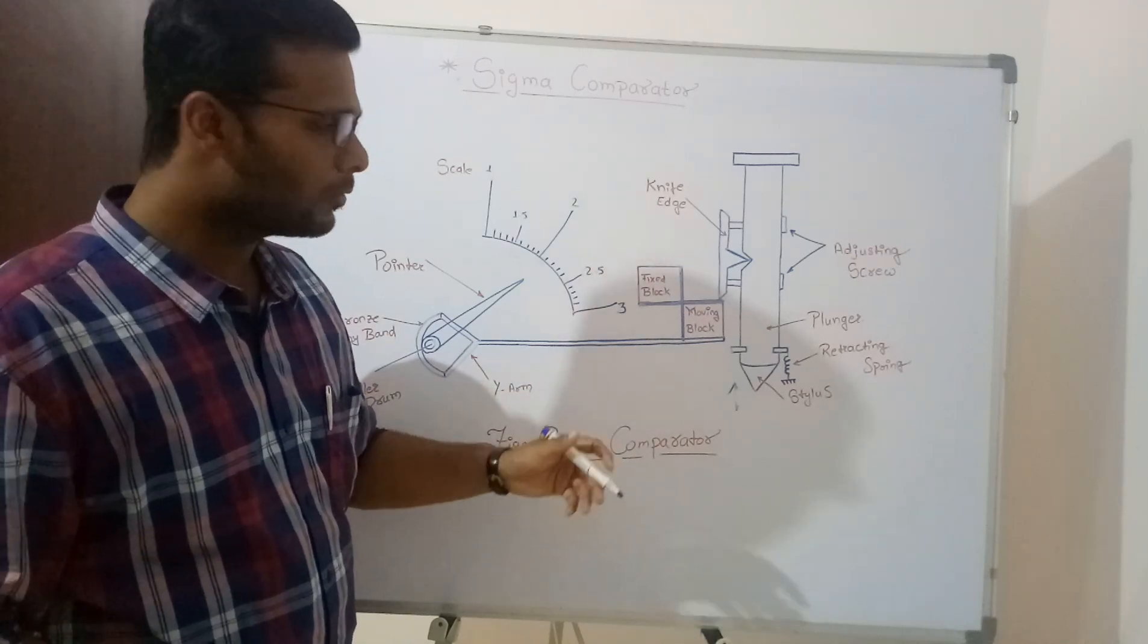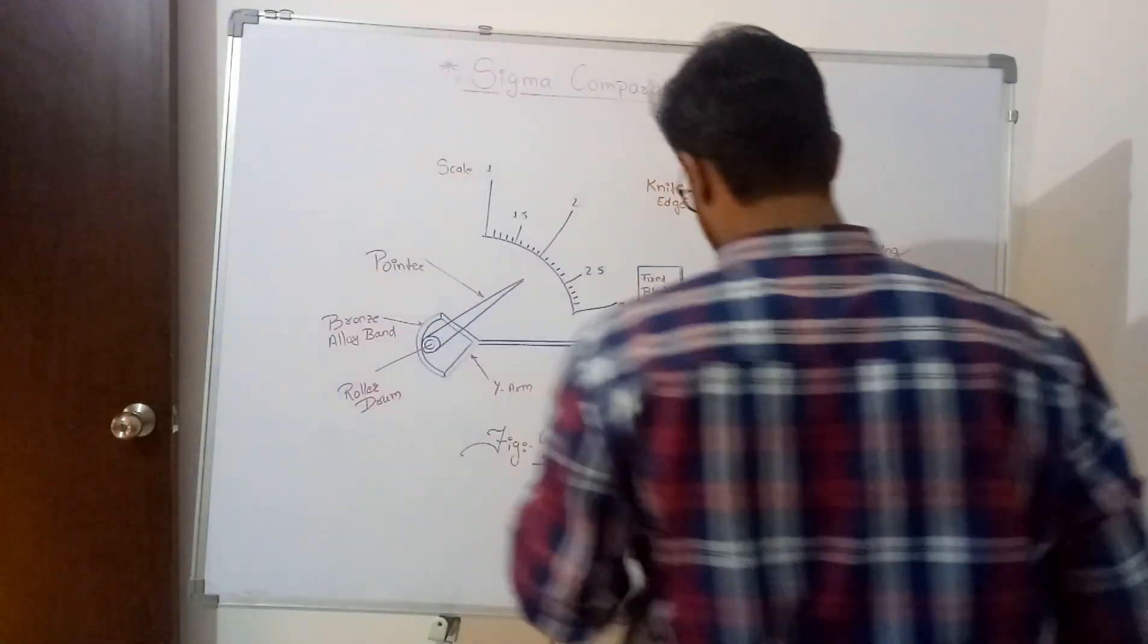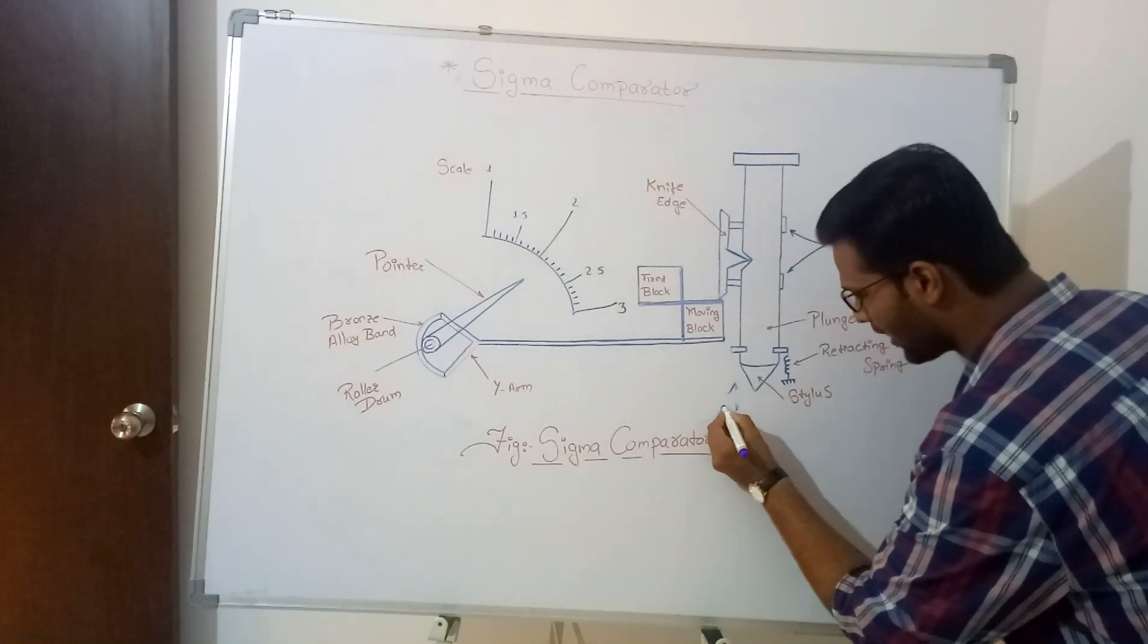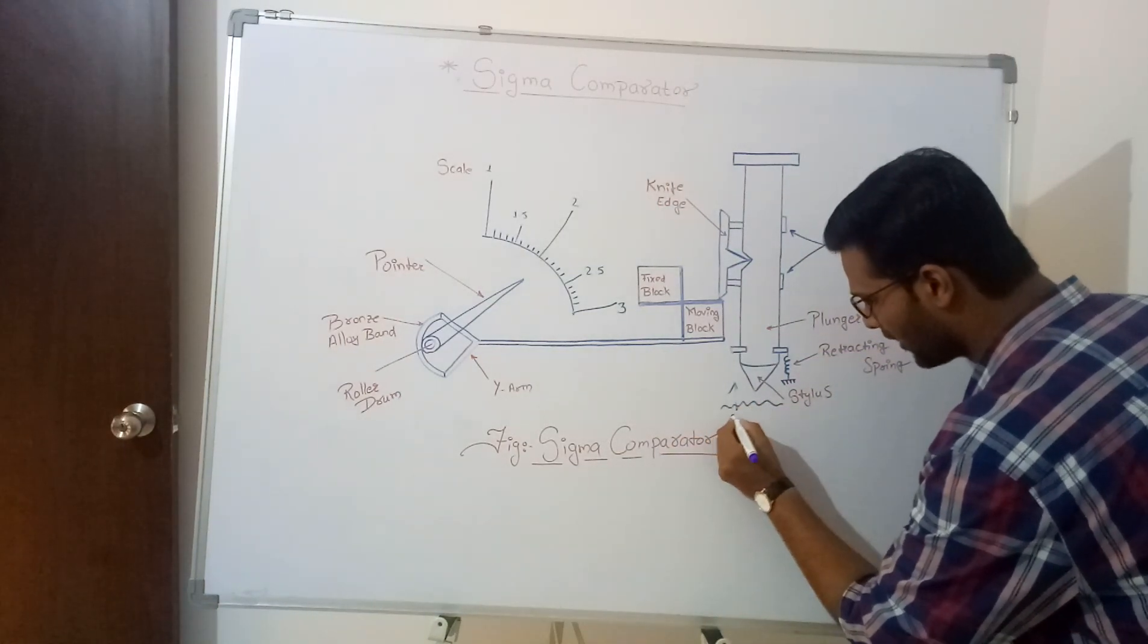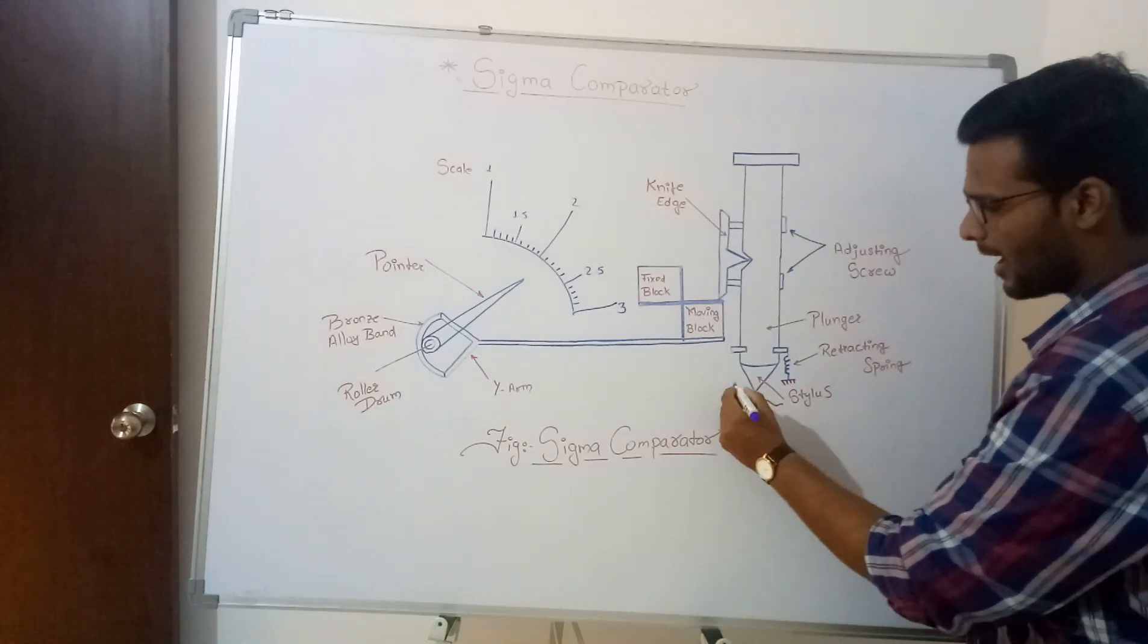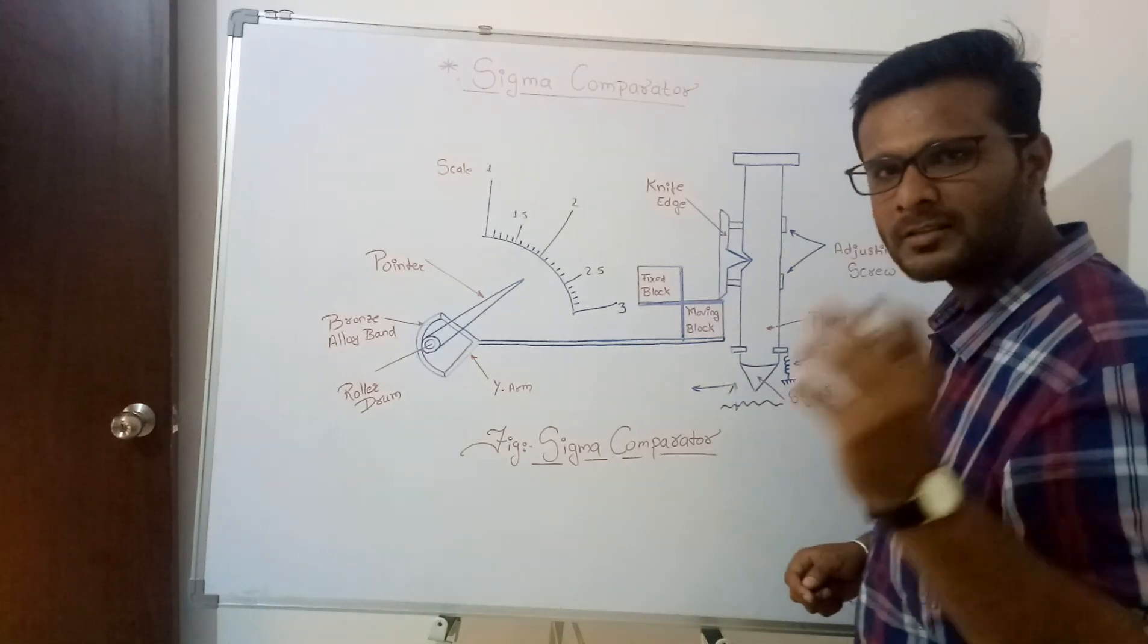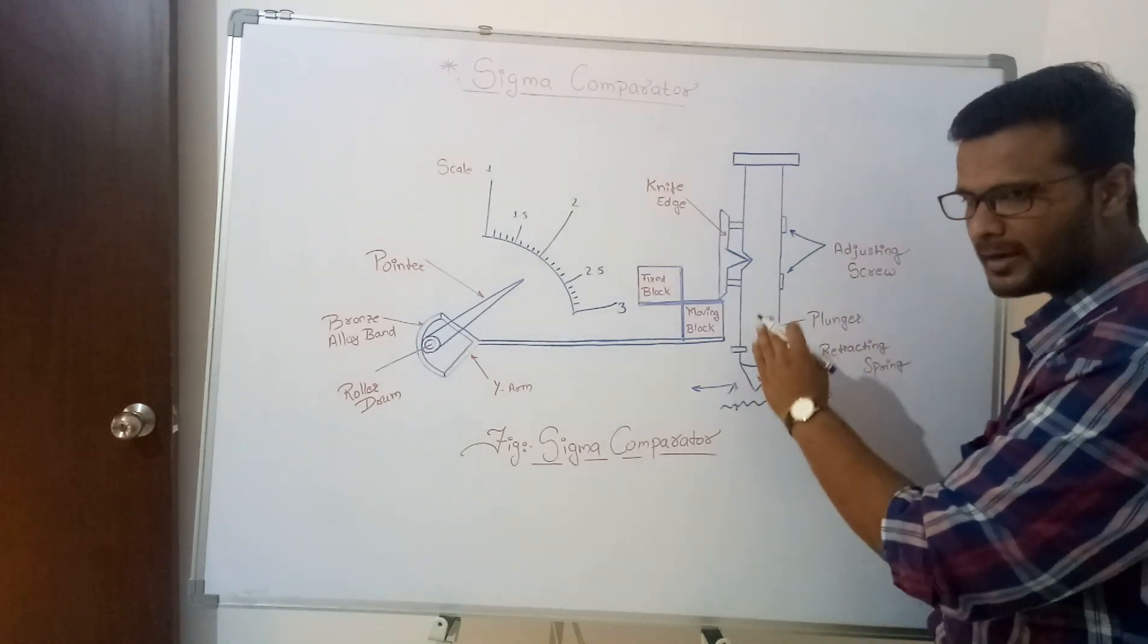When you want to do any linear deflection or when you are having any sort of an object, for example what you'll take is we are having any rough object over here. We have to place this stylus on this rough object and as we move this stylus towards this direction what happens is there are some ups and downs.